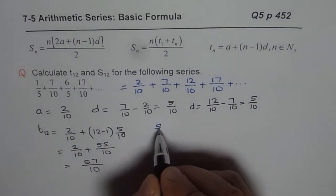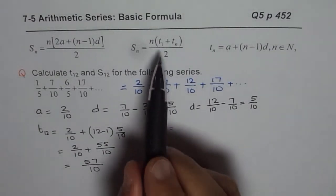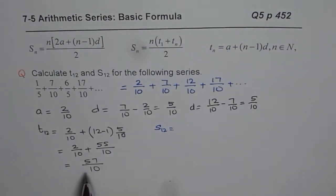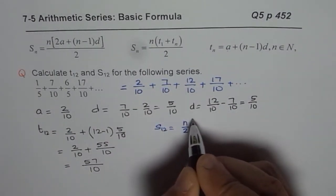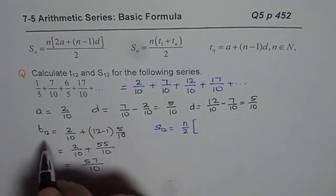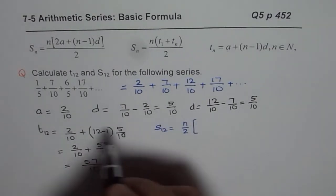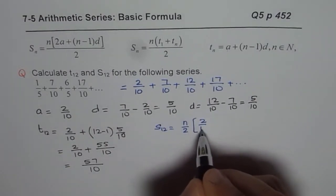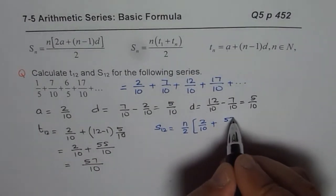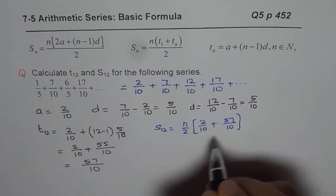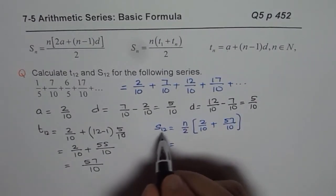Now let us find what is the sum of 12 terms. Now to find sum of 12 terms we will use average of first and last. So we can use N over 2 times sum of the first and last terms. First term is 2 over 10. And the last term is T12 which is 57 over 10.